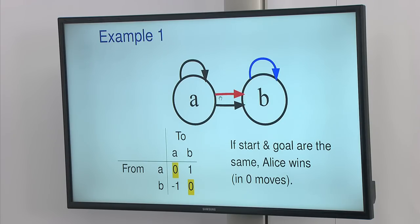So if Bob starts at A and Alice is trying to get him to go to A, or similarly for B, then Alice wins in zero moves.